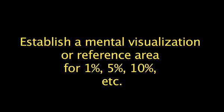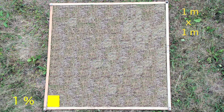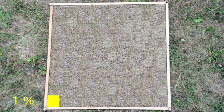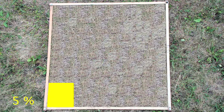To estimate percentage cover, one first needs to establish a mental image of what different amounts of cover would look like for a quadrat of a given size. For example, in a 1 meter by 1 meter quadrat, a 10 centimeter by 10 centimeter square constitutes 1% of the total area. For comparison, many people have hands about 10 centimeters in width. A 22.4 centimeter by 22.4 centimeter square is 5% of the total quadrat area. A sheet of letter-sized paper would be just over 6%.